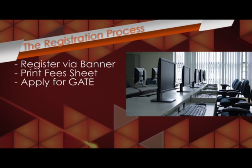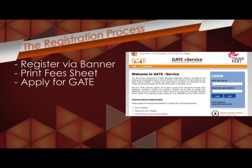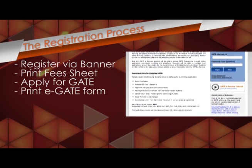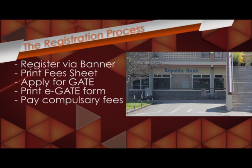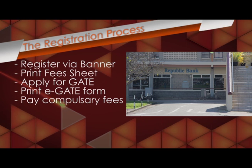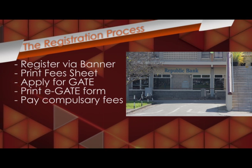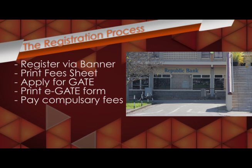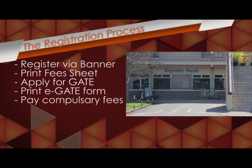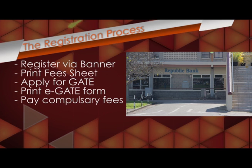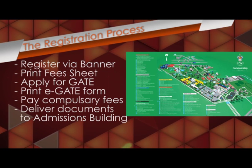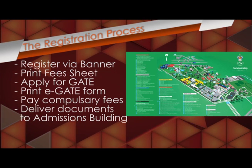Apply for GATE through the eGATE website, print your eGATE form, and pay compulsory fees at any branch of Republic Bank. Attach the eGATE form, fee sheet, and bank slip, and drop it off at the Student Admissions Building.